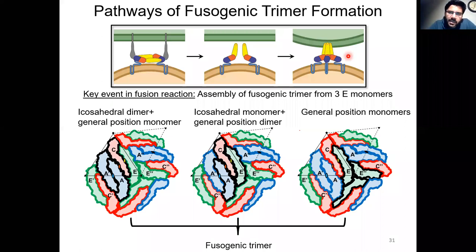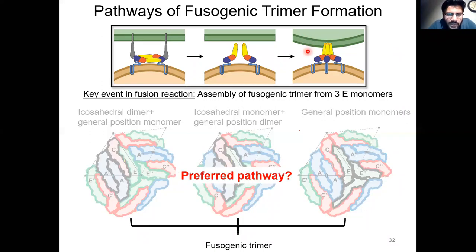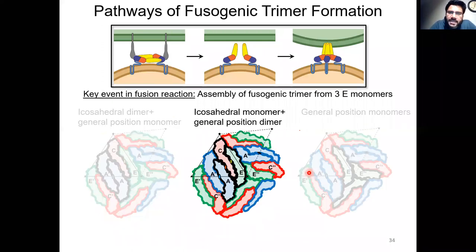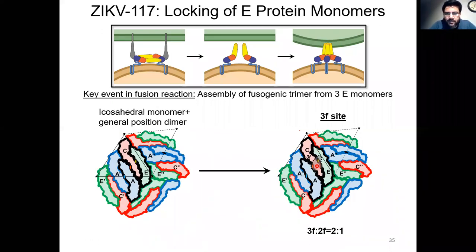Despite advances in elucidating the structure and function of this E-protein trimer, the identity of the preferred pathway for trimer formation had remained elusive. Another postdoc in Michael Rossmann's group determined the structure of the related dengue virus under low pH conditions. This structure showed the presence of 60 symmetric fusogenic trimers on the viral surface — exactly one trimer per asymmetric unit. The only pathway that allows formation of exactly 60 fusogenic trimers is the one that combines a blue monomer with a red monomer and a green monomer. These three monomers are locked in place by ZIKV-117 at its more populated 3F site. Hence, ZIKV-117 achieves neutralization by locking together very specific E-protein monomers, preventing reorganization from dimers into fusogenic trimers.